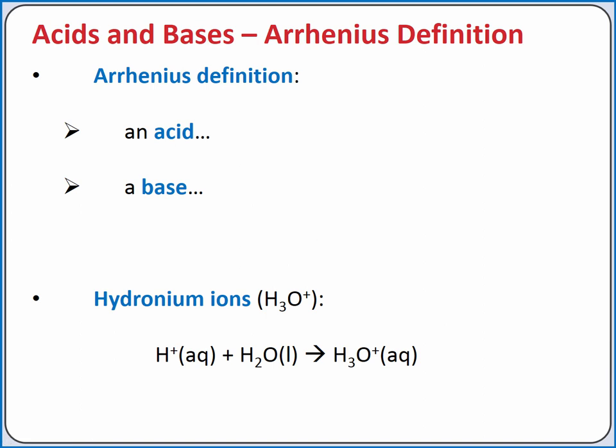There are multiple definitions of acids and bases. We'll first introduce the Arrhenius definition. According to this definition, an acid produces hydrogen ions in solution, and a base produces hydroxide ions in solution. When an acid is in water, the hydrogen ion combines with water to produce the hydronium ion. H-plus and hydronium are sometimes used interchangeably in aqueous solution.